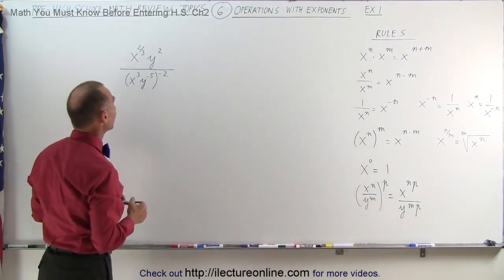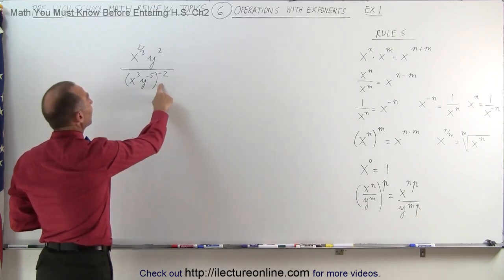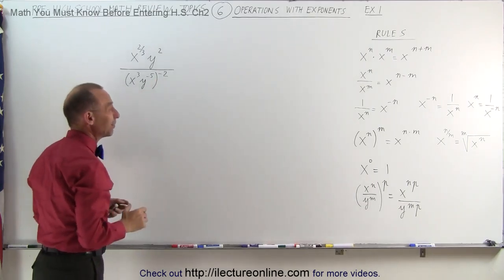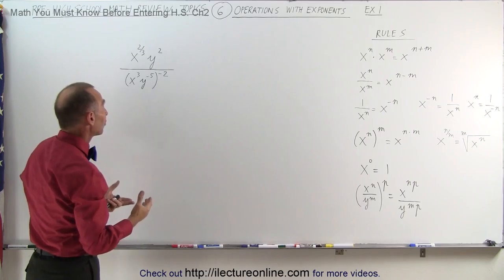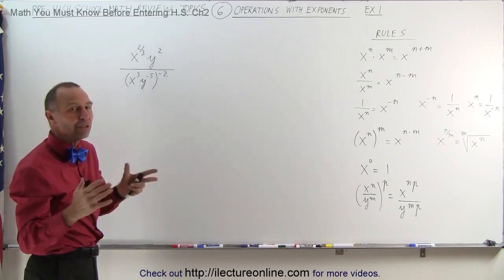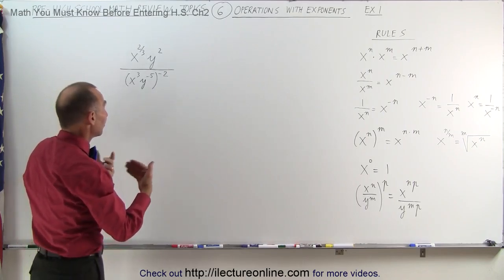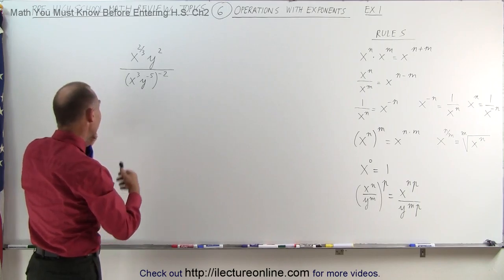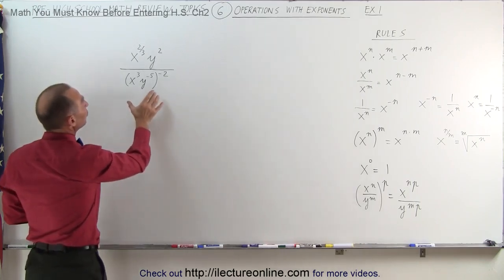If you have something like x to the n power divided by y to the n power, and the whole thing is raised to the p power, you simply multiply the exponent with each exponent in the numerator and denominator. Those are most of the rules you need to know. Let's now apply those rules to our example.